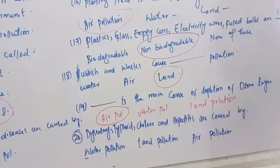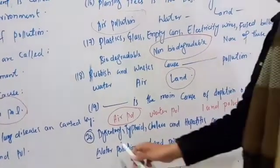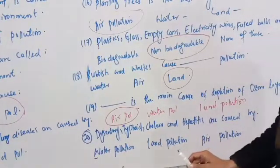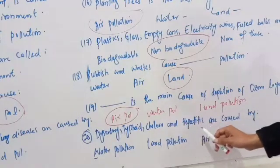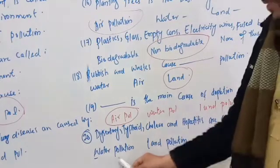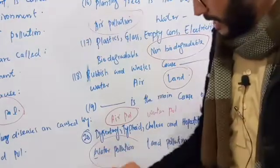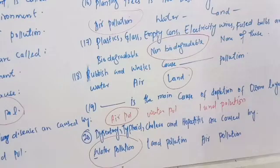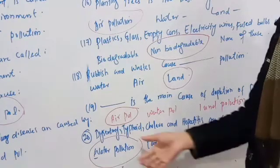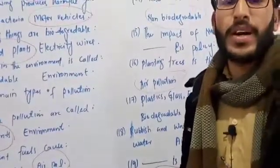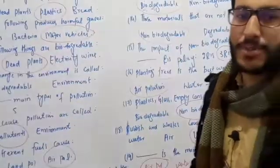Diseases such as dysentery, typhoid, cholera, and hepatitis are caused by water pollution. If we use contaminated water, we may get certain diseases like dysentery, cholera, and hepatitis. This concludes Chapter 4 of science. Thank you, and see you in the next lecture.